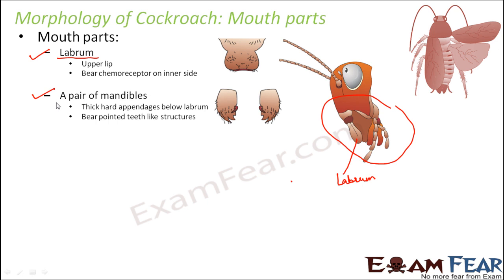Next is a pair of mandibles. These are thick, hard appendages located just below the labrum. They exist in pairs — one on each side of the mouth. The mandibles bear pointed, tooth-like structures and help in grinding the food.